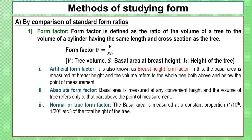There are three types of form factors: Artificial Form Factor, Absolute Form Factor, and Normal or True Form Factor, also known as the Breast Height Form Factor. In the Artificial Form Factor, the basal area is measured at breast height and volume refers to the whole tree, both above and below the point of measurement. In the Absolute Form Factor, the basal area is measured at any convenient height and volume refers only to that part of the tree above the point of measurement.